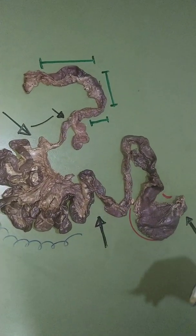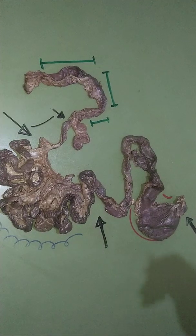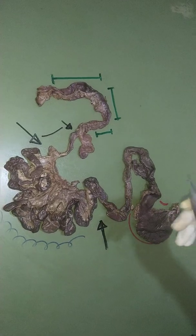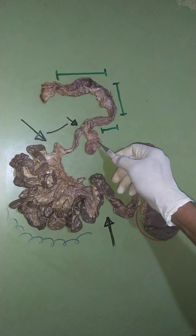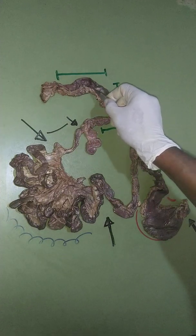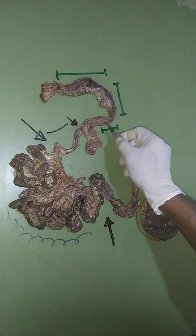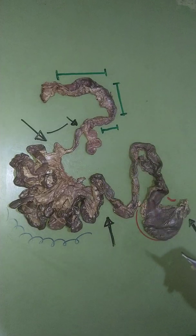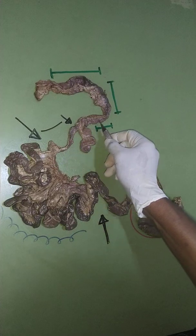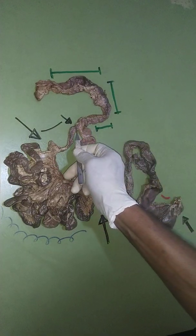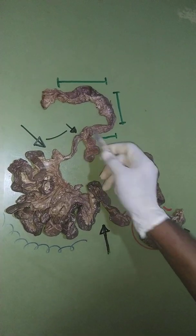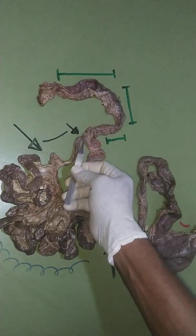Now let's look at the large intestine, which is actually very short. The first part of the large intestine is the cecum. This is followed by the colon — the entire length of this tube is the colon. The ileum actually joins the colon at a junction called the ileocolic junction.